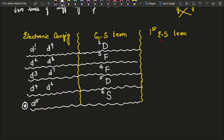Now coming to the excited state term symbol. For D there is no first excited state — there is only the ground state term symbol. For F there is one first excited state, which is P. So for triplet F and quartet F, the first excited state is P. This is the table we need to know in order to plot the Orgel diagram.